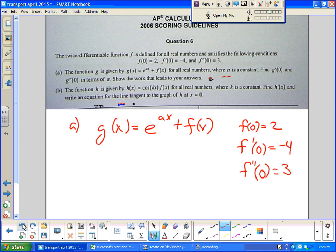And then it says the function g is given by g of x equals e to the ax plus f of x for all real numbers where a is a constant. Find g prime of zero and g prime prime of zero in terms of a. Show all work.